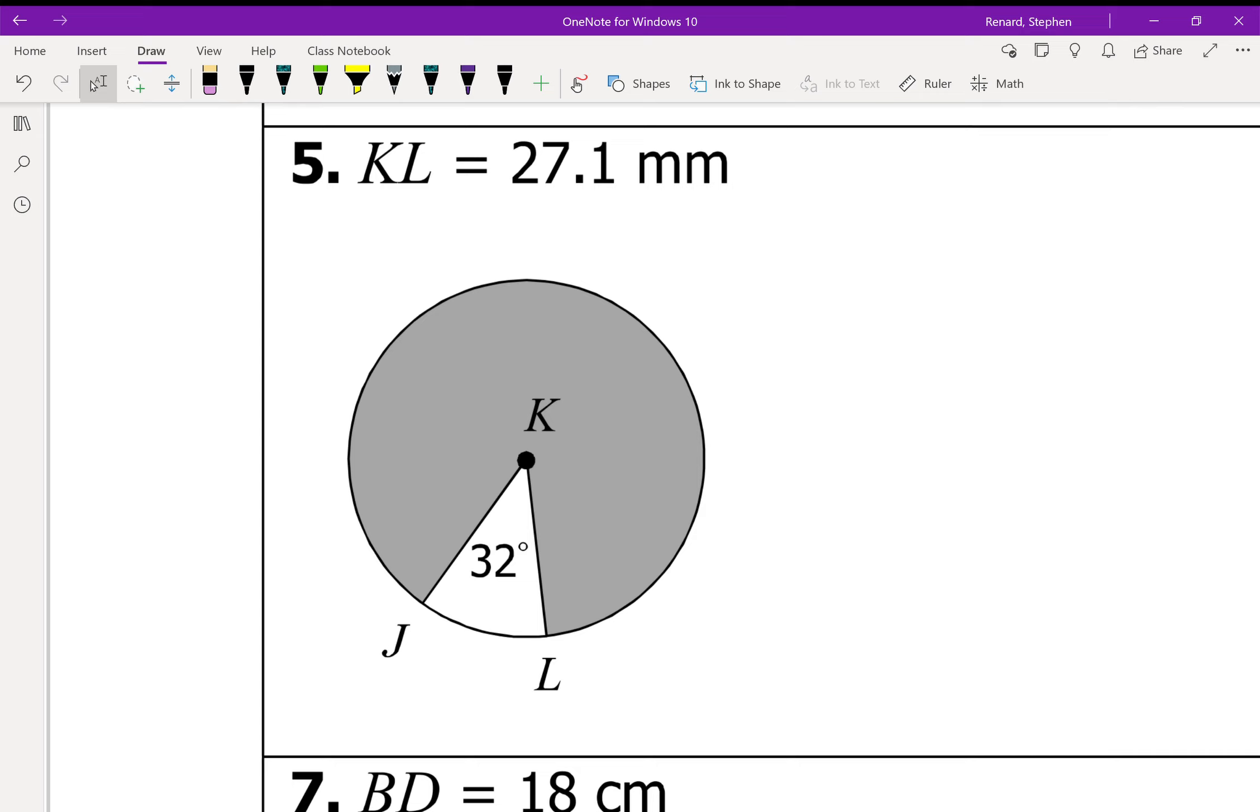Okay. So here again, we have a shaded area that's outside. So we have 360 minus 32. And so that's going to be 328 degrees. K to L is 27.1 millimeters. So it's a very teeny tiny circle.